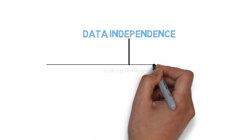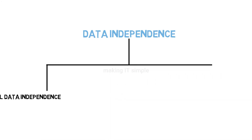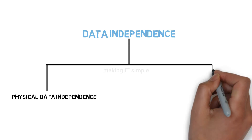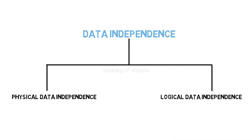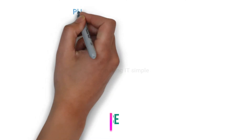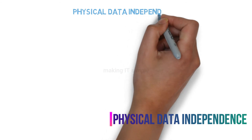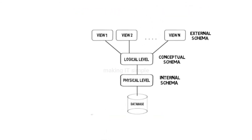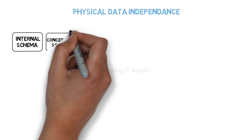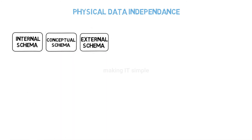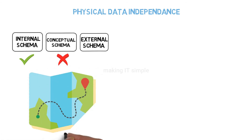The first type is physical data independence and the second is logical data independence. Physical data independence works between the physical level or internal schema and the logical level or conceptual schema. It refers to the characteristic of being able to modify the physical or internal schema without any modifications to the logical or conceptual schema.